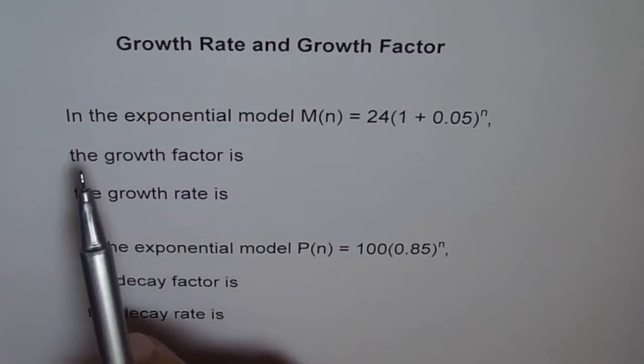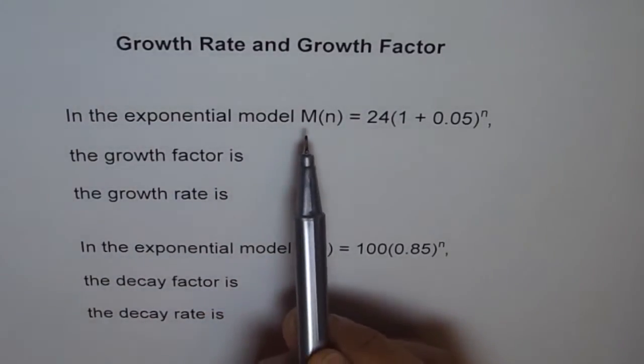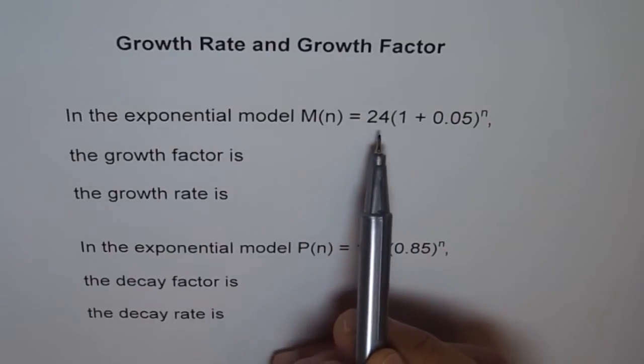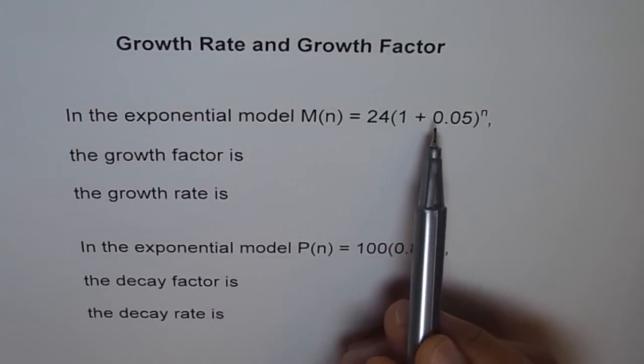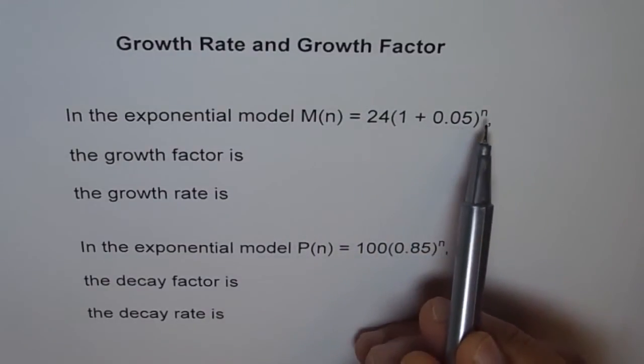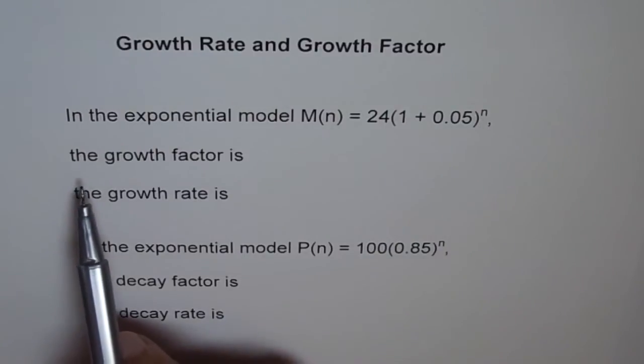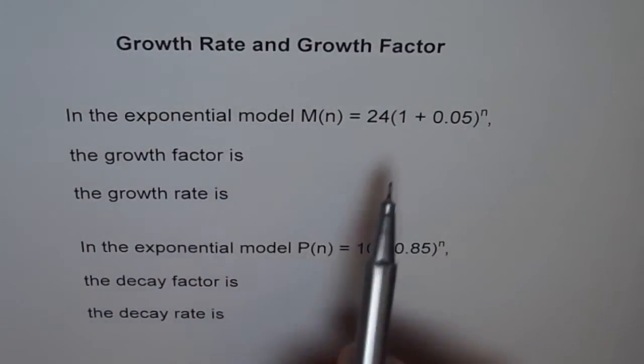One says that in the exponential model, M(n) equals 24(1 + 0.05) to the power of n. The growth factor is, in this equation, what is the growth factor?